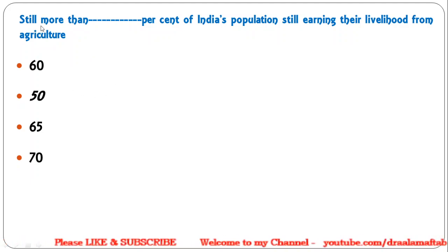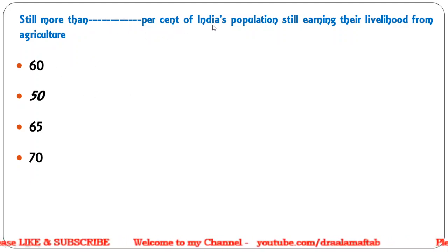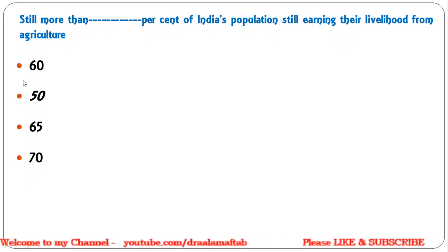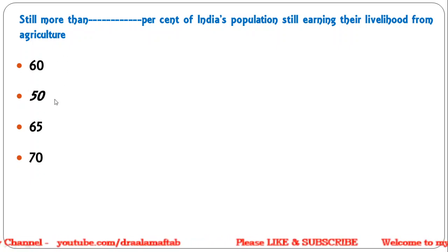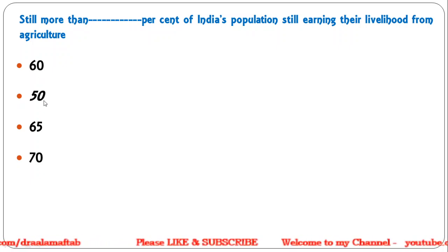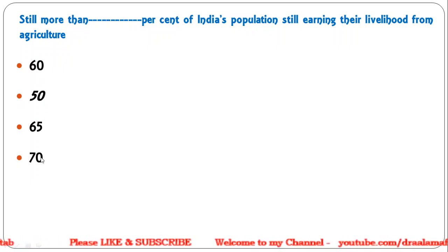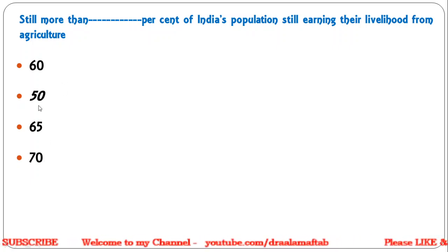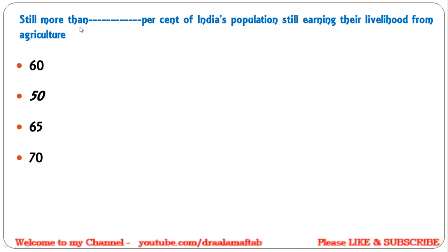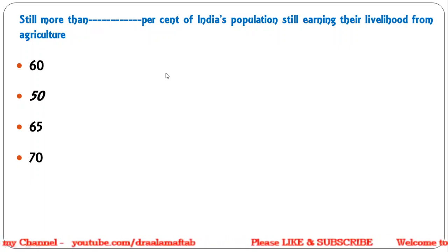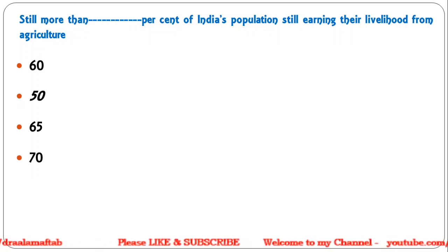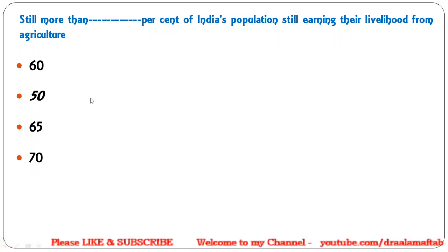Next question: still more than dash percent of India's population is earning their livelihood from agriculture. Options are 60 percent, 65 percent, or 75 percent. The correct answer is 50 percent — still more than 50 percent of India's population is dependent on agriculture, so the second option is correct.